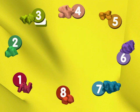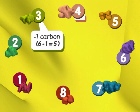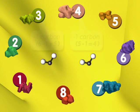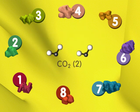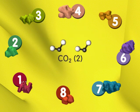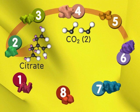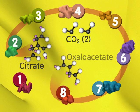Each time a carbon molecule loses one carbon, a carbon dioxide is released. So two carbon dioxides are formed during the conversion of the six-carbon molecule back to the four-carbon molecule.